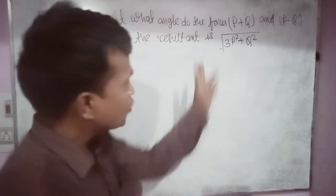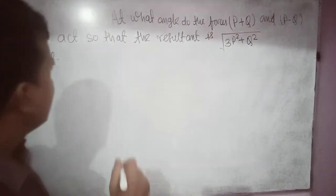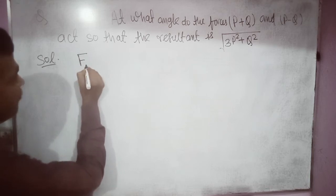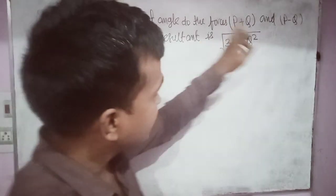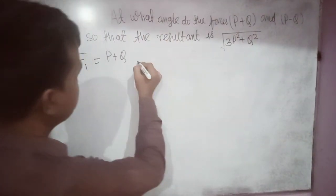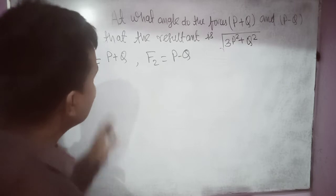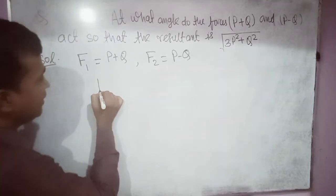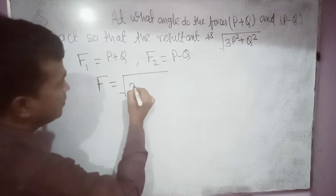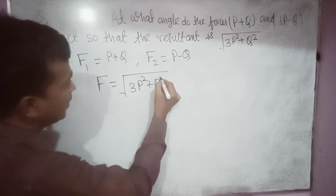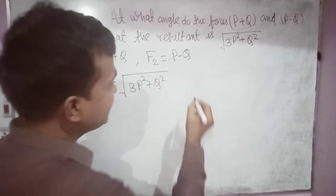The question says there are two vectors. The first vector has magnitude (P + Q), let this force be F1. There is another force having magnitude (P - Q), let this force be F2. Let the resultant of these forces be F having magnitude √(3P² + Q²). We have to find the angle between forces F1 and F2 — let this angle be theta.